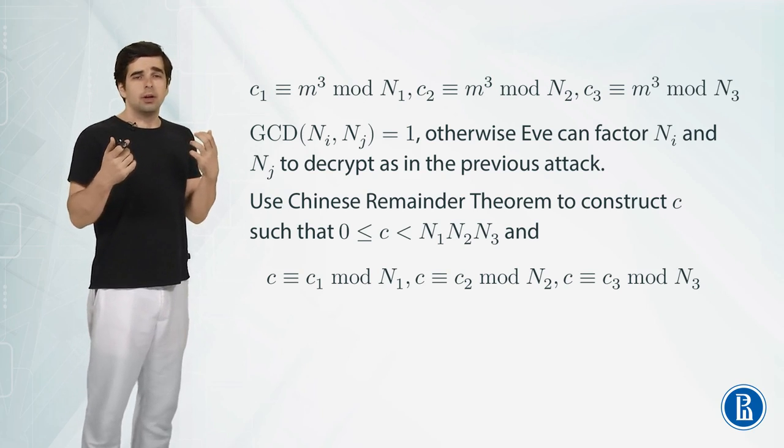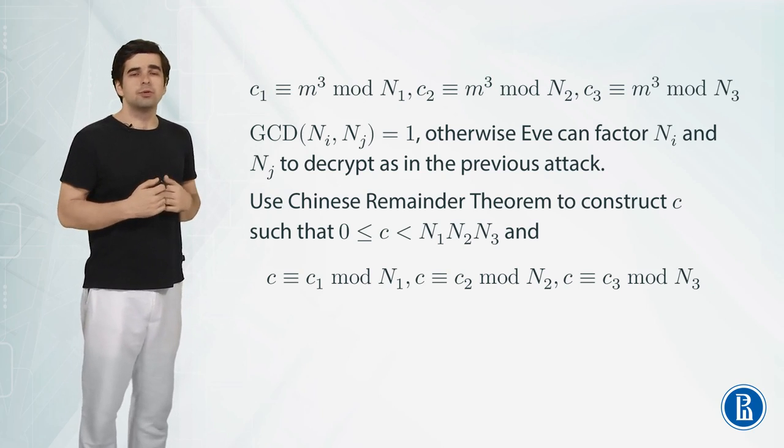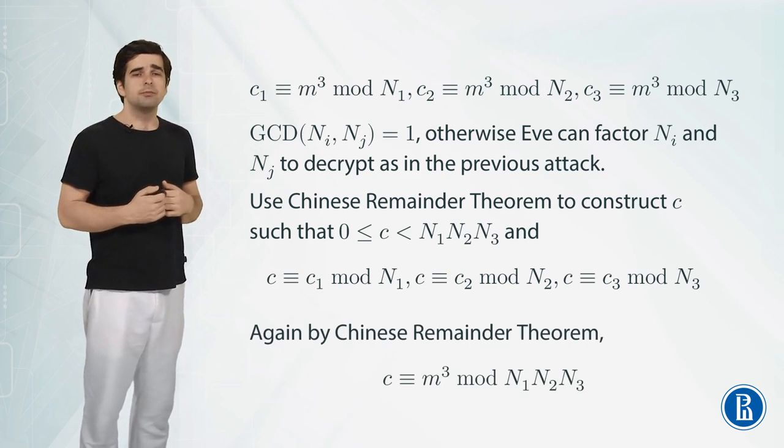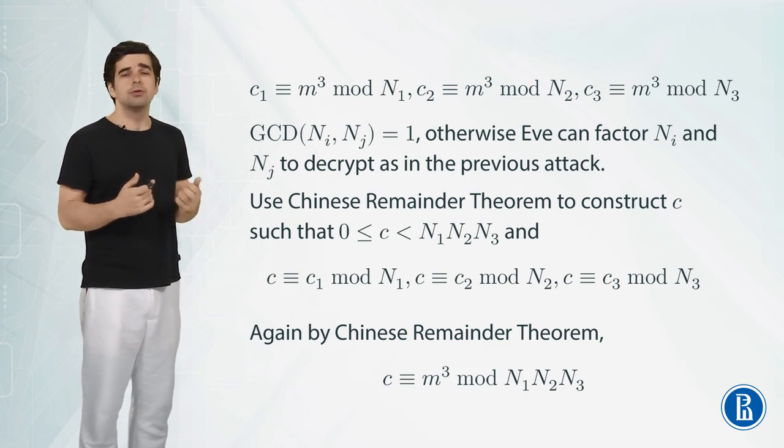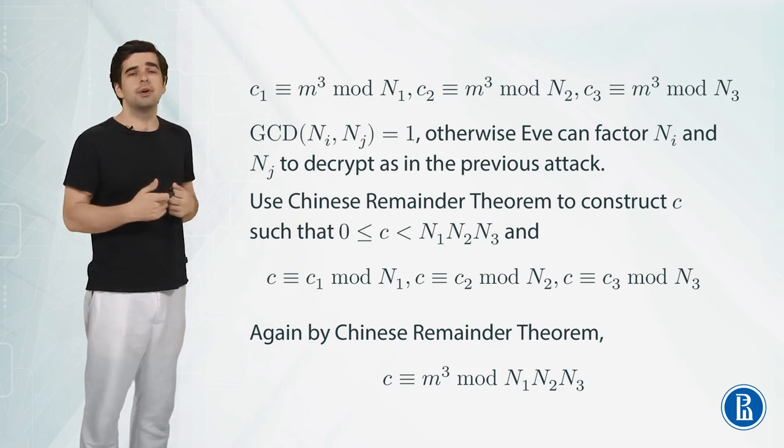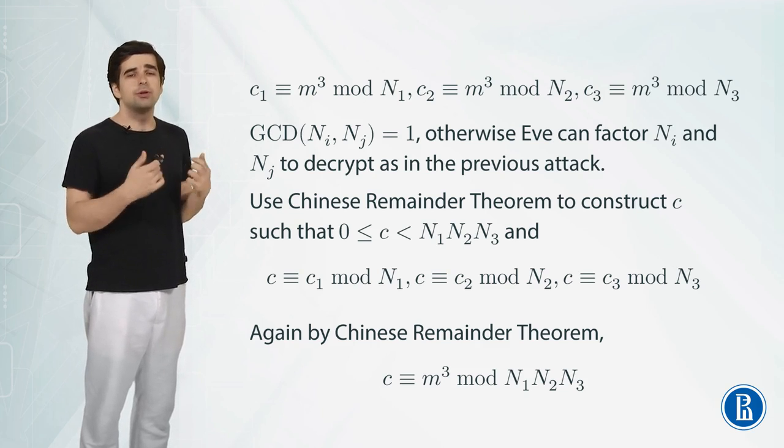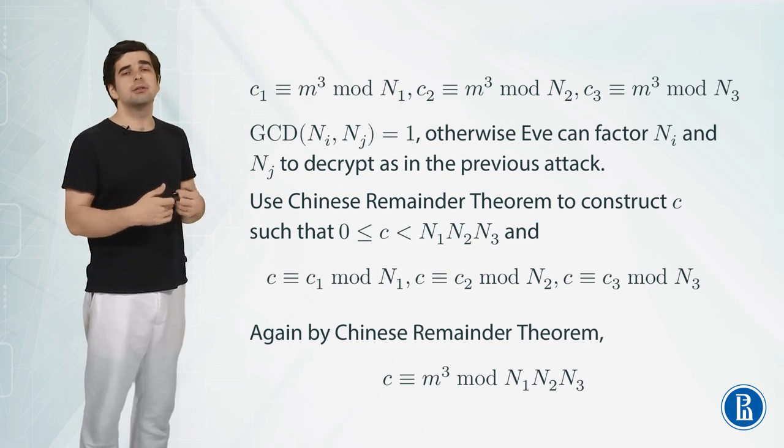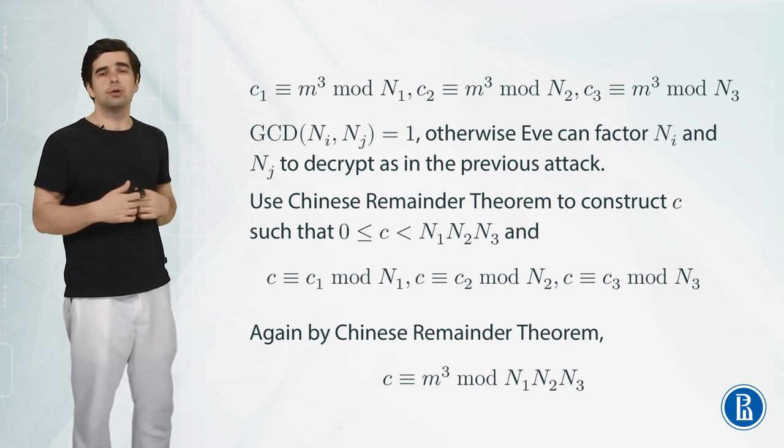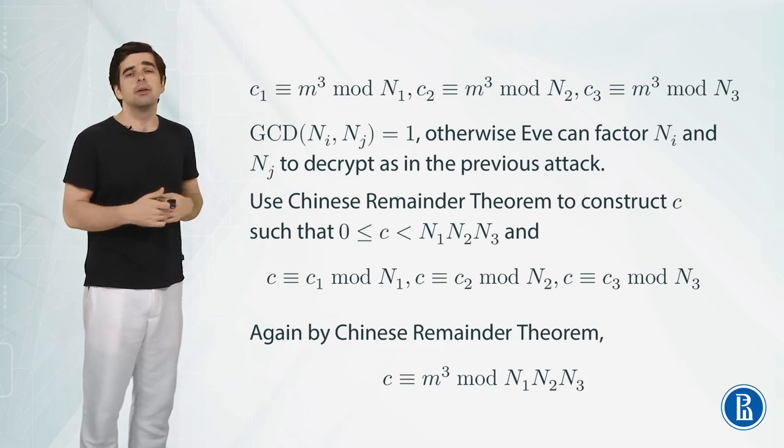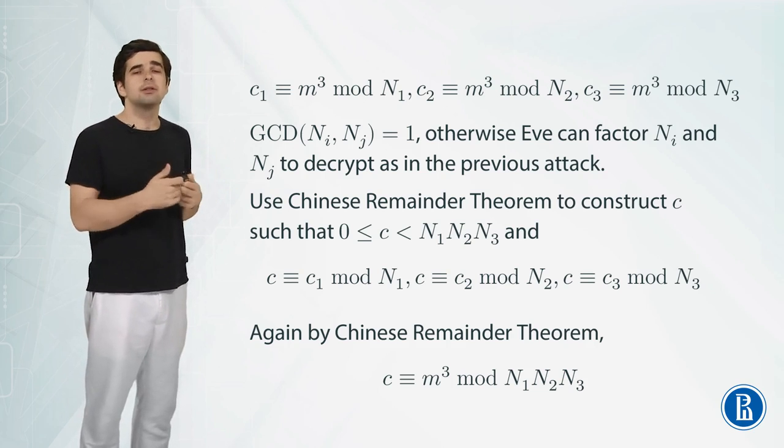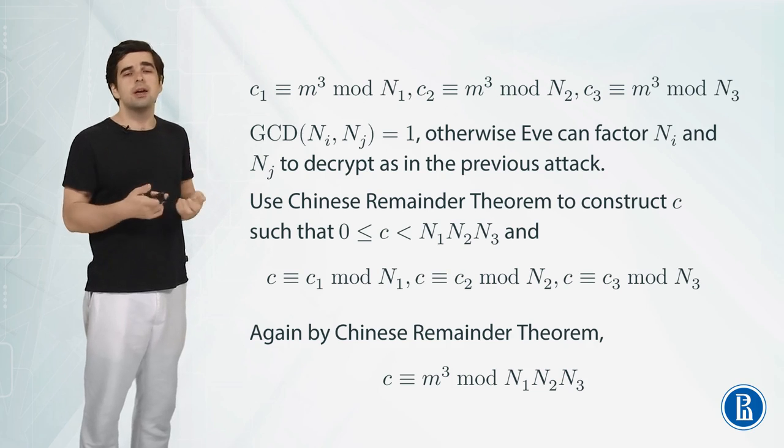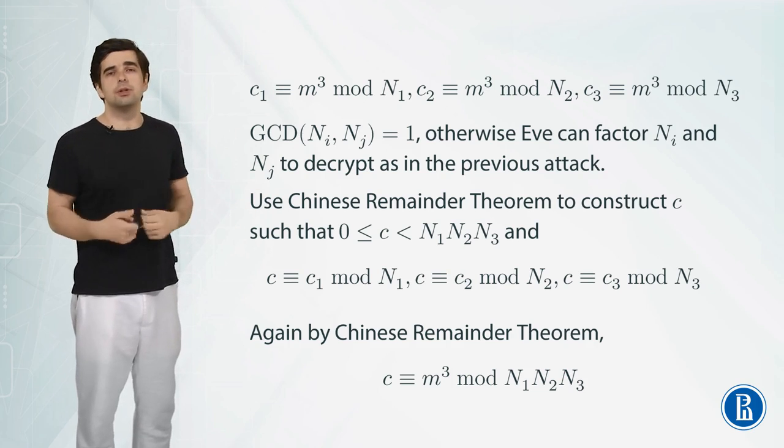So if we use our algorithm to construct such c then it turns out that c will be equal to m³ modulo N₁N₂N₃. Why is that? Well again by Chinese remainder theorem because c gives the same remainders modulo N₁, N₂ and N₃ as m³ from the above equations. And this means as N₁, N₂ and N₃ are pairwise coprime that c and m³ have the same remainder modulo of the product of these moduli.